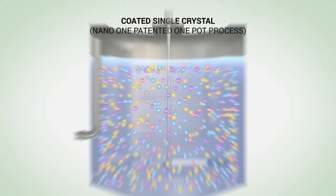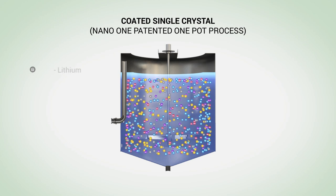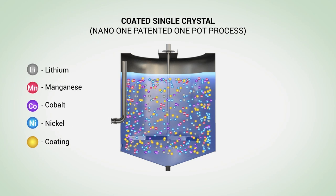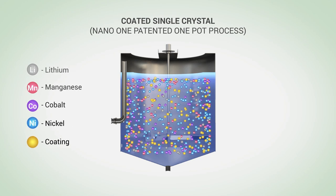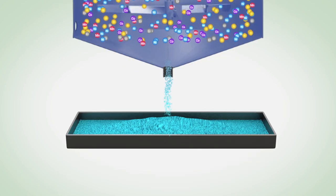It begins with NanoOne's patented one-pot process, where lithium is mixed in a single reaction with coatings and other metal feedstocks to produce a composite precursor powder.